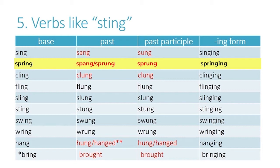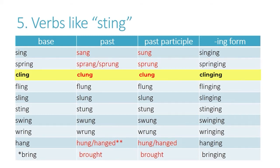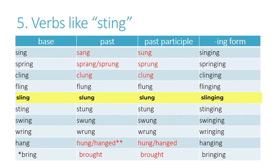In the past, it can be 'spring, sprung, sprung.' This is a transition verb between 'sing, sang, sung' and the next pattern. With 'cling, clung, clung,' the past tense and the past participle are the same — unlike 'sing, sang, sung' where the past differs from the past participle. So you have: fling, flung, flung; sling, slung, slung.